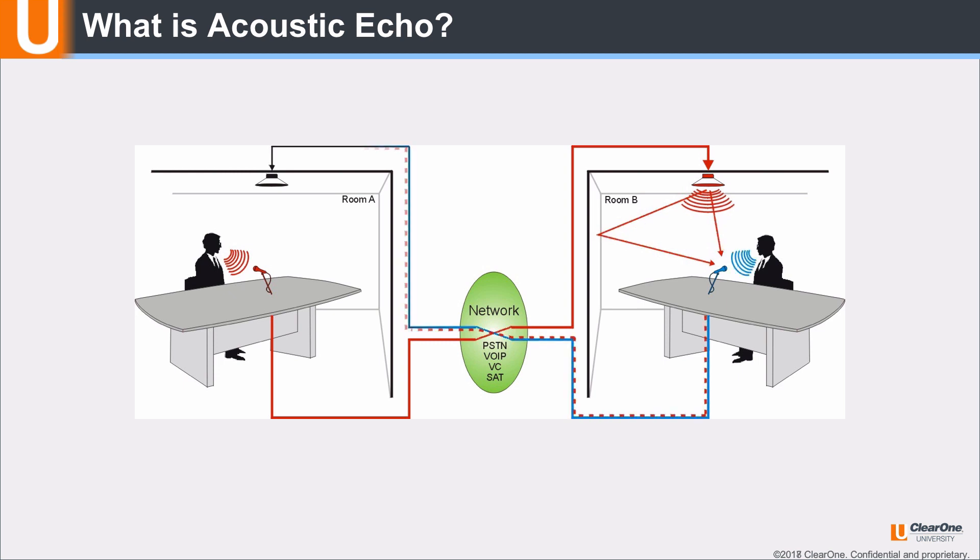That audio, along with the local speech from room B, is sent back to room A. The result is that I hear an echo of myself whenever I speak. This is acoustic echo.